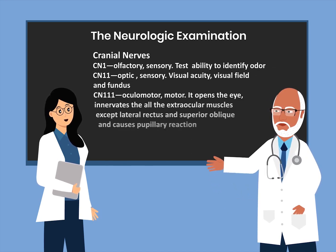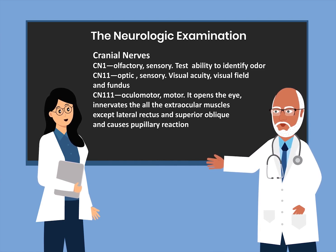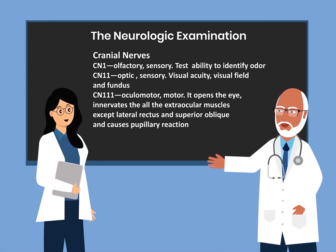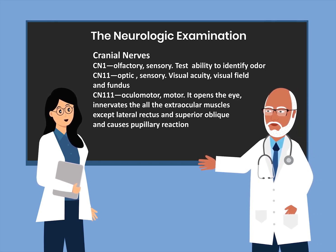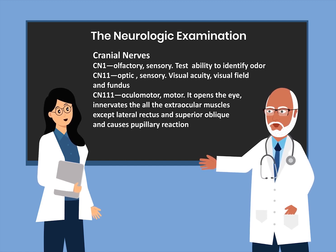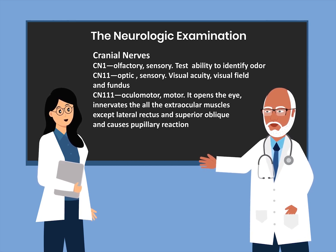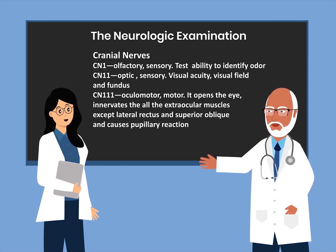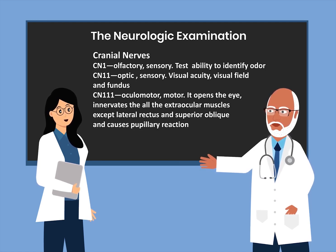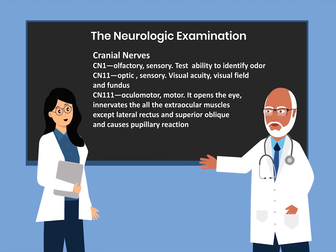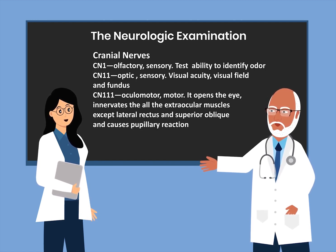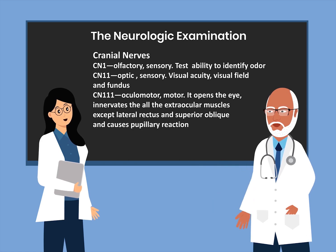Next, we want to talk about the cranial nerves. There are 12 cranial nerves. Cranial nerve one is the olfactory, which is sensory — it tests the ability to identify odor. Cranial nerve two is the optic, which is also sensory — it evaluates visual acuity, visual field, and the fundus. Cranial nerve three is the oculomotor. It opens the eye, innervates all the extraocular muscles except the lateral rectus and the superior oblique, and it causes pupillary reaction.